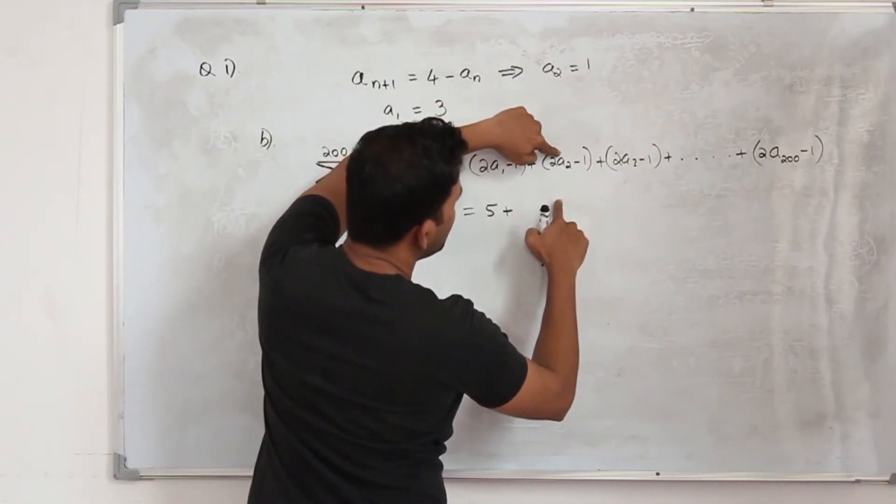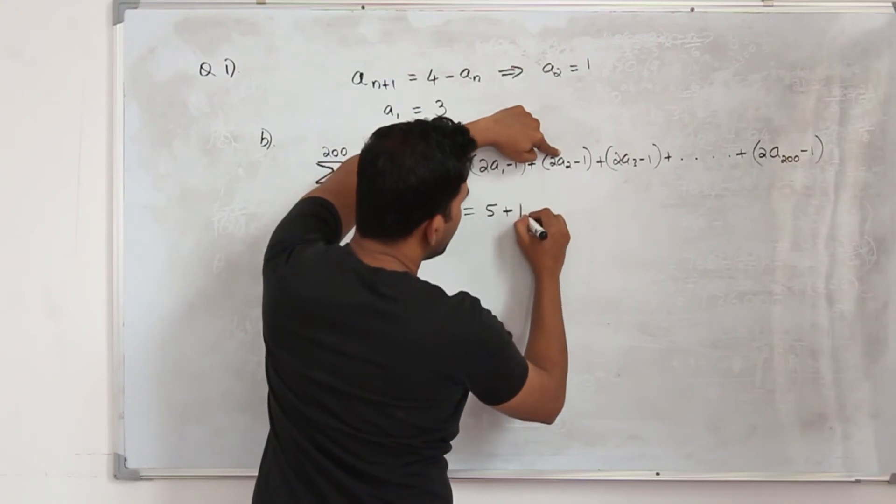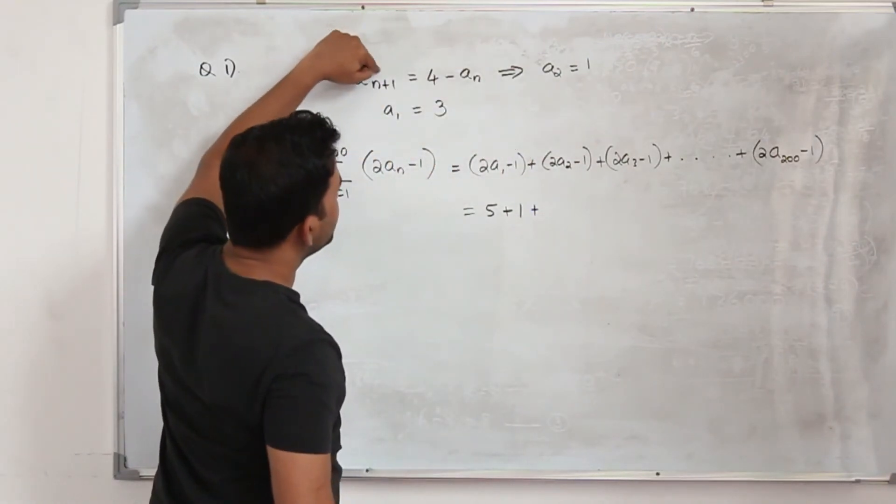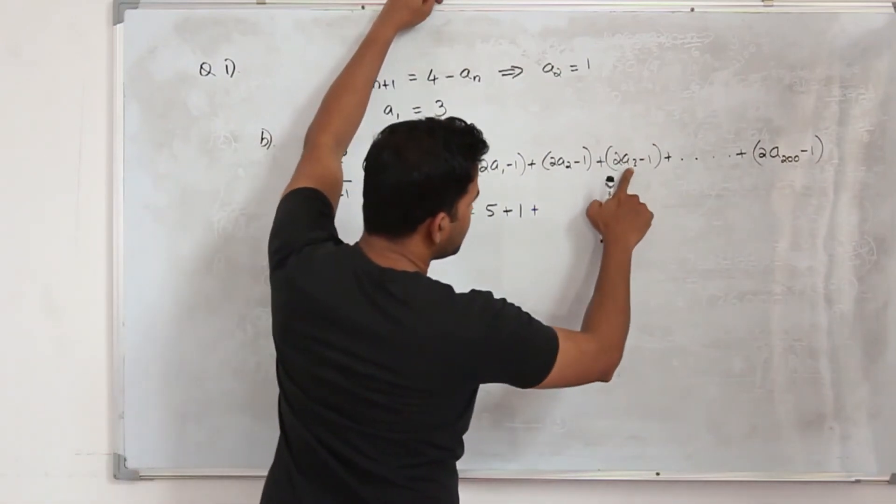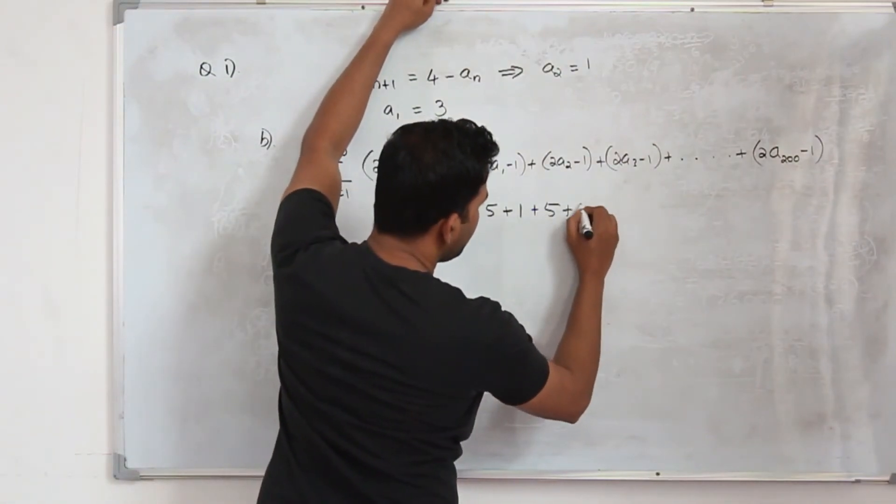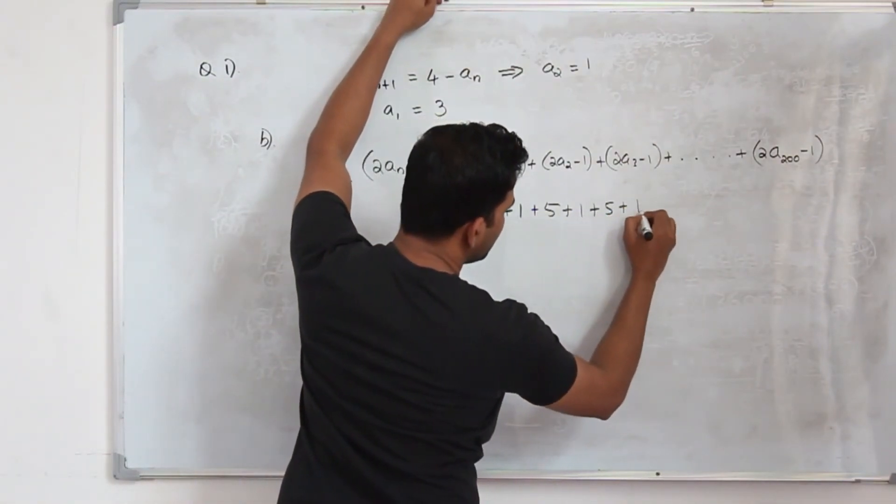So when you substitute a₂ is equal to 1 here, 2 minus 1 is 1, plus—your a₃ here is 3. When you substitute 3 here, you will have 5 plus 1, 5 plus 1, which is 6.